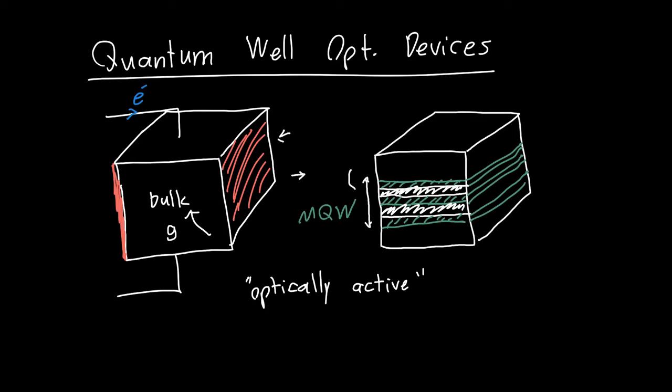Only a specific subset of the quantum well is optically active. So these wells themselves have some gain associated with them, but this bulk material, the rest of the device, does not. So this device might actually have some absorption associated with it.